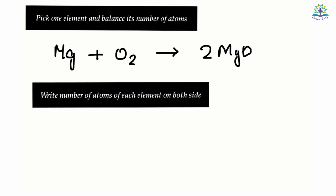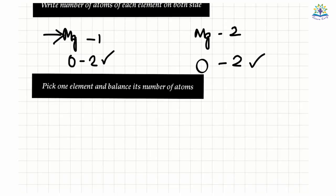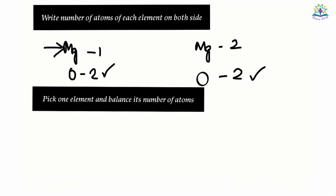Now we will go back to step 1 and recheck the number of atoms on the left and right side. The number of atoms of magnesium on the left is 1 while on the right is 2. The number of atoms of oxygen on the left and right are currently 2. So we need to balance magnesium right now. I will multiply 2 to magnesium on the left side.